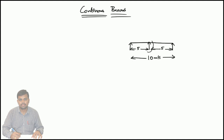Why? Because this intermediate support is dividing the single beam into two spans or two beams. So these types of beams we call as continuous beams. Simply, a continuous beam is a beam which is supported on more than two supports.